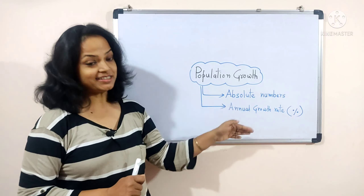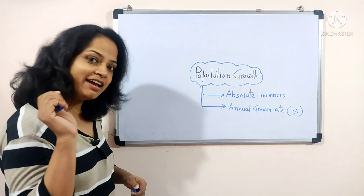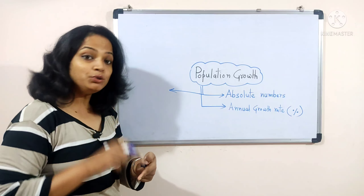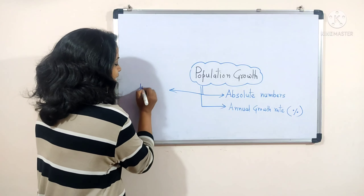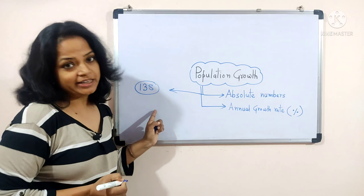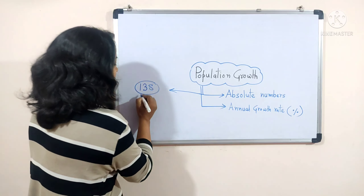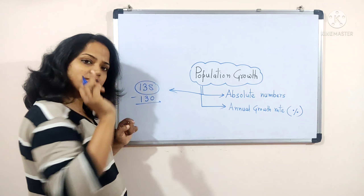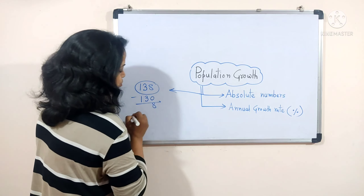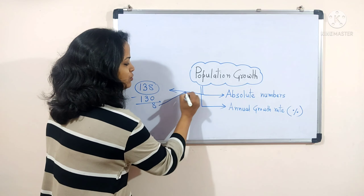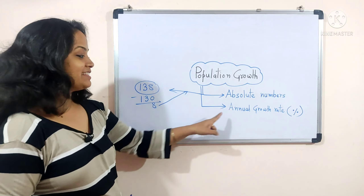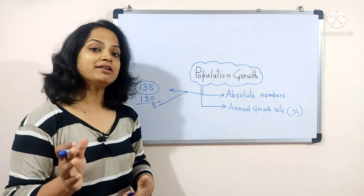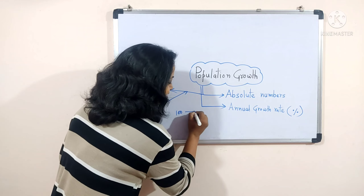Population is gradually increasing. How is population growth calculated? There are two ways: first, absolute numbers, and second, annual growth rate. For absolute numbers — suppose India's population in 2020 is 138 crore, and just 10 years back India's population was 130 crore, then simply subtracting gives us 8 crore — that would be the absolute numbers.